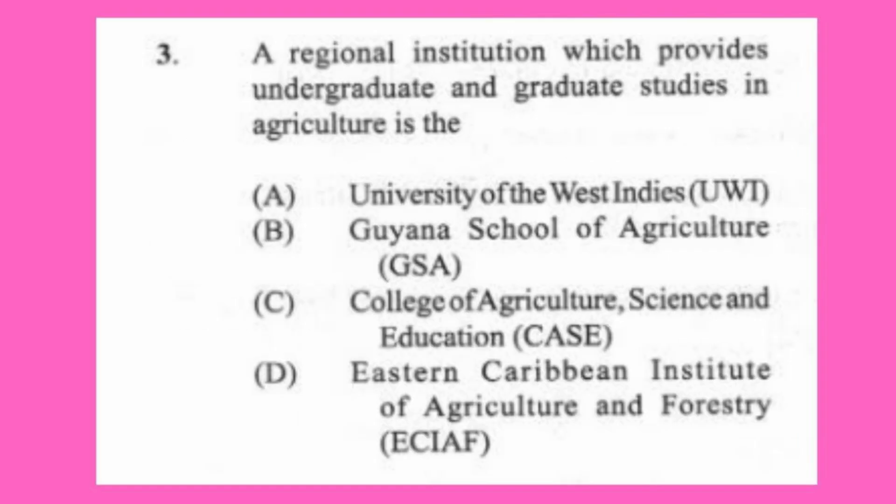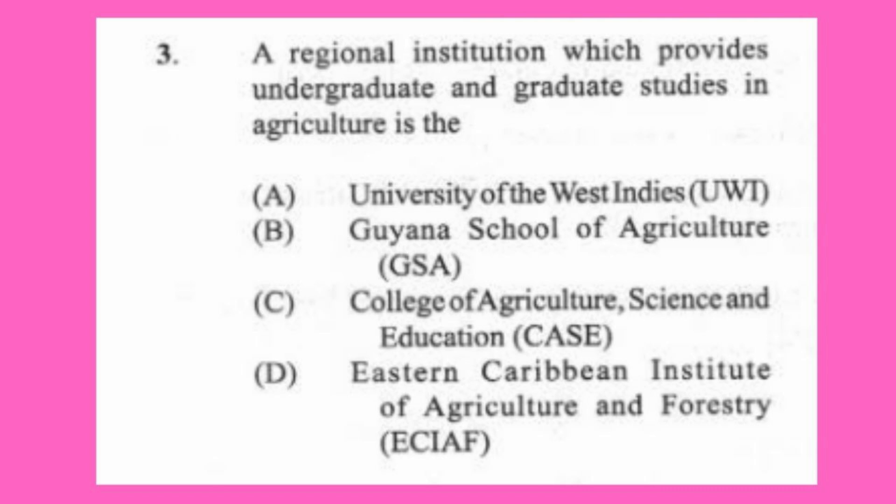Question 3: A regional institution which provides undergraduate and graduate studies in agriculture is (a) University of the West Indies (UWI), (b) Guyana School of Agriculture (GSA), (c) College of Agriculture Science and Education (CASE), (d) Eastern Caribbean Institute of Agriculture and Forestry (ECIAF). The answer is A, University of the West Indies. More than one branch of UWI can be found in the Caribbean. CASE is a local institution only found in Jamaica.